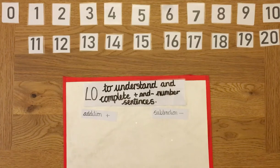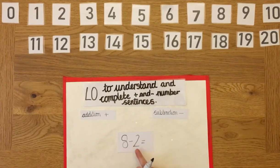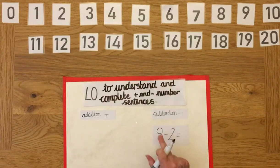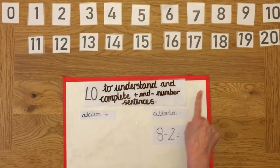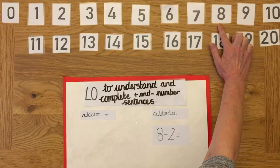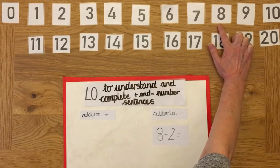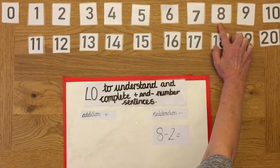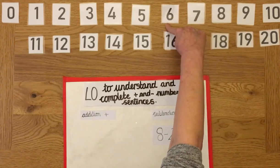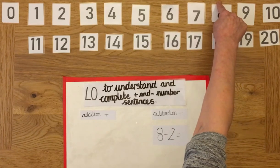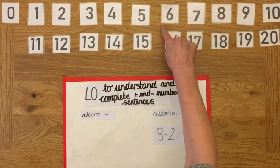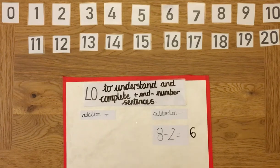Another one: eight take away two equals. It's a subtraction, a take away. We're going to use our number track. We start at number eight and we're going to take away two — so do we go forwards or backwards? We go backwards because we're taking away. Eight, two jumps back: seven, six. We jumped twice backwards — eight take away two equals six. That's the answer to this subtraction.